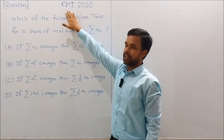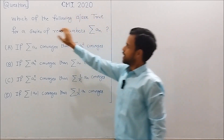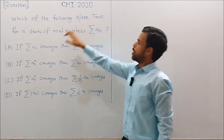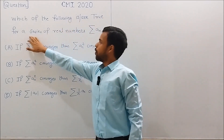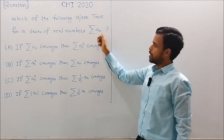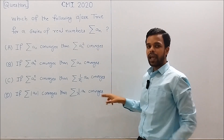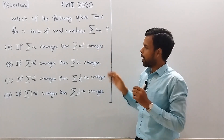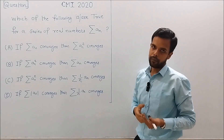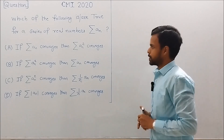CMI stands for Chennai Mathematics Institute. The question is: which of the following is or are true for a series of real numbers An? We have been given 4 different statements and we have to determine which of them are true. Let us begin the solution.